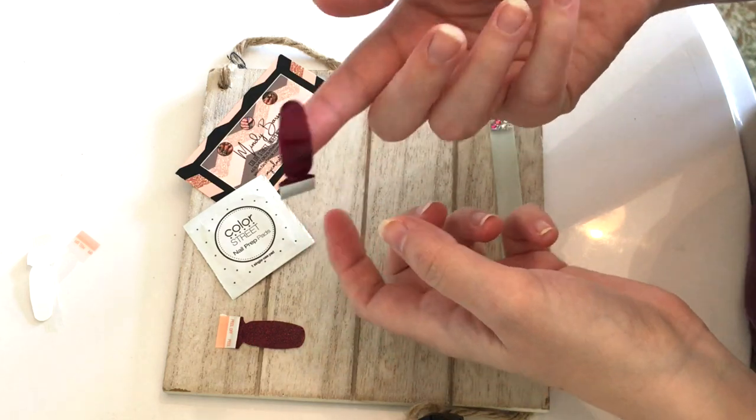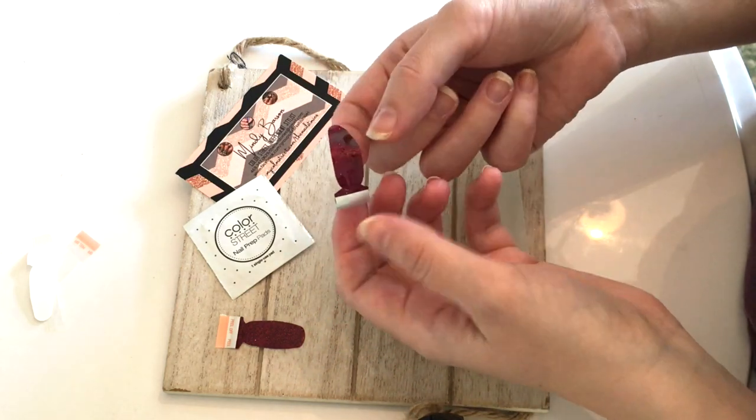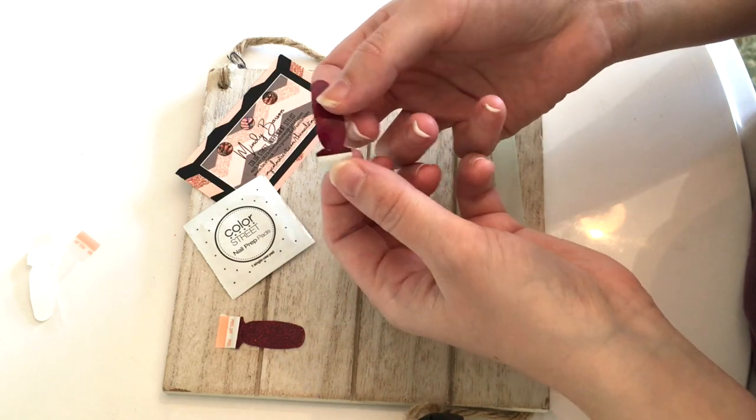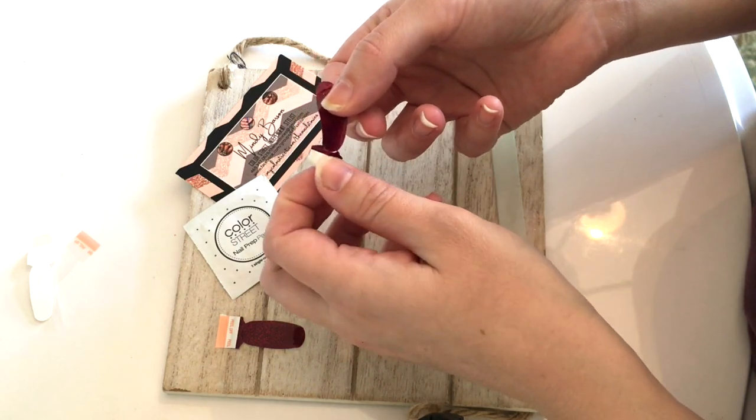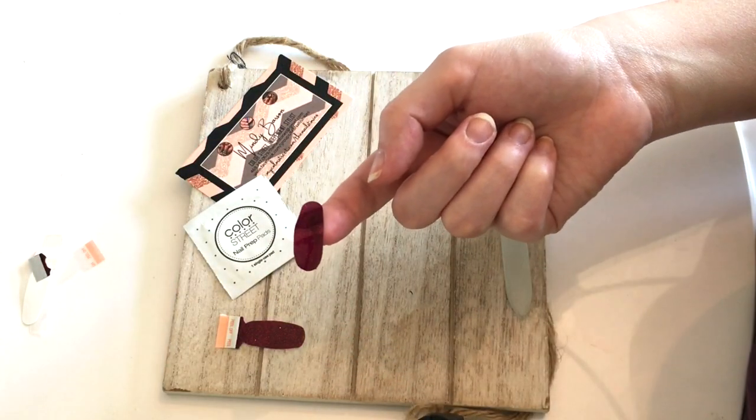Now you can hold the strip underneath. It won't lose its stick just by holding it for a couple seconds. Then you'll just grab the silver tab and pull it off like that. It comes off real easy. Now you have your strip.